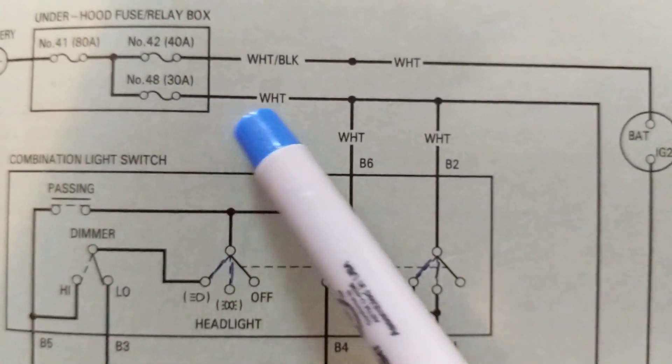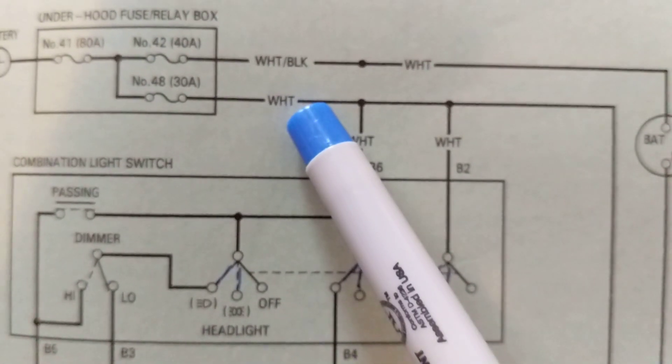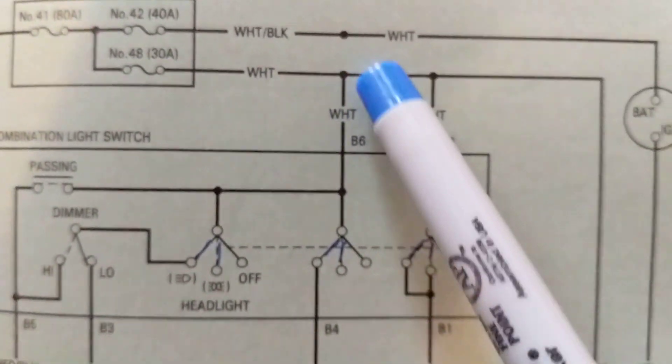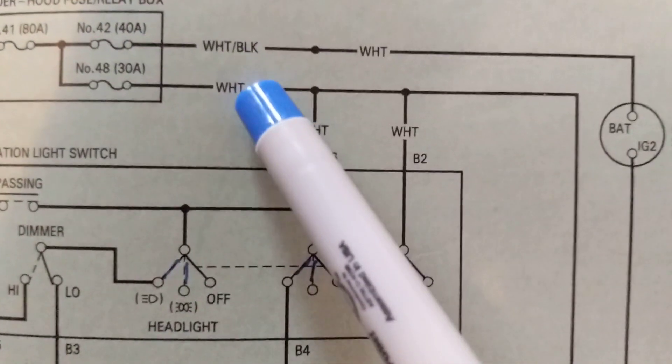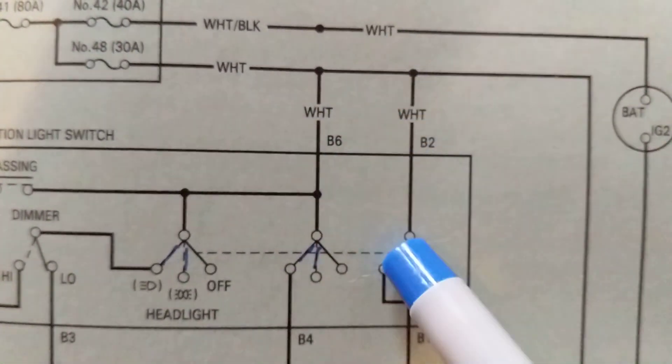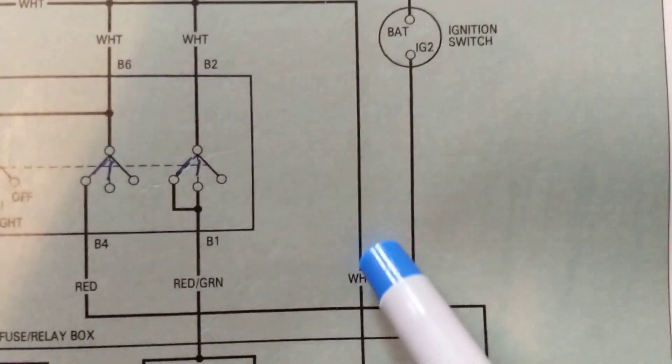Number 48 fuse. Now this becomes a white wire. Now we have a lot of choices to go - there's a connection here, there's a connection here. That means we can go either here, we can go over here, or we can go here. Let's go this way.